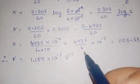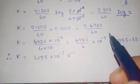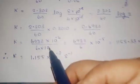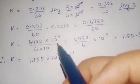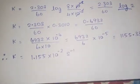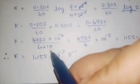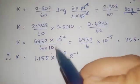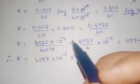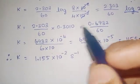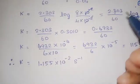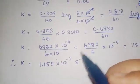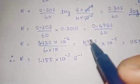We express 60 as 6 × 10. So we have 0.6932 × 10⁻⁴ divided by 6 × 10. Using the rule that bases are the same, we add the powers: 10⁻⁴ multiplied by 10⁻¹ gives 10⁻⁵.